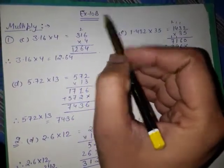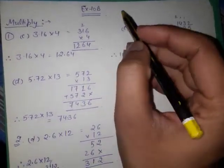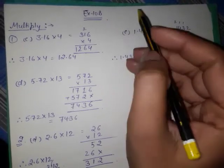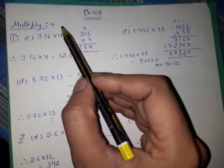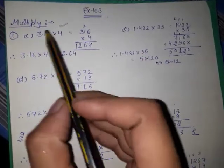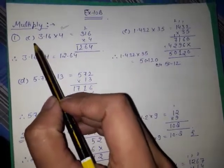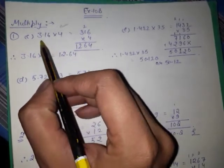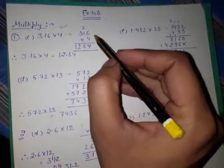Hello students of class 5th. Today we will discuss exercise 10B and the first question is on multiplication. We will discuss C part of this exercise: 3.16 multiplied by 4.